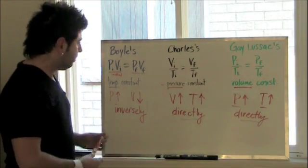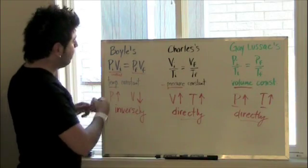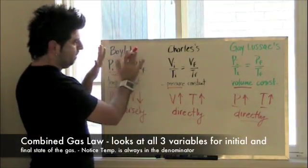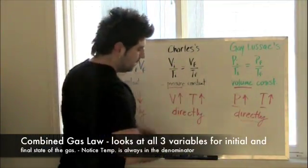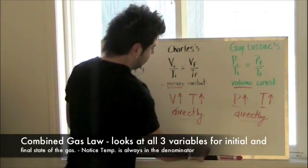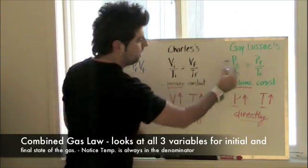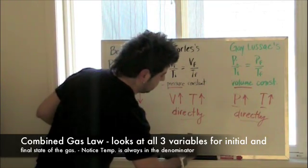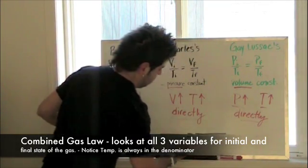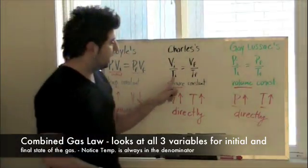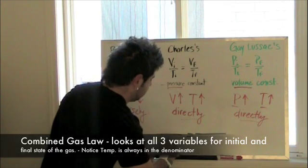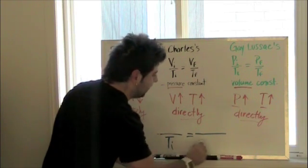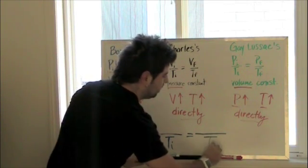So if we combine all these together, notice here in all these equations except for Boyle's law, notice how temperature is found here in the denominator of each one of these equations. So what we're going to do is we're going to have two sets of fractions. And because temperature is in the denominator, we're going to put temperature here in our denominator, initial and final.